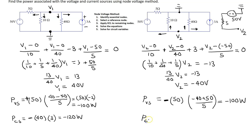Similarly, the power associated with the current source: the voltage drop across the current source is V2, which is minus 40 volts. Since V2 is a positive voltage rise, we associate this polarity with the current source. The power is V2 times the current, which is minus 40 times 3 amps. Applying passive sign convention, the current is entering the terminal marked plus, so we write a positive sign. This gives minus 120 watts — the same result as before.